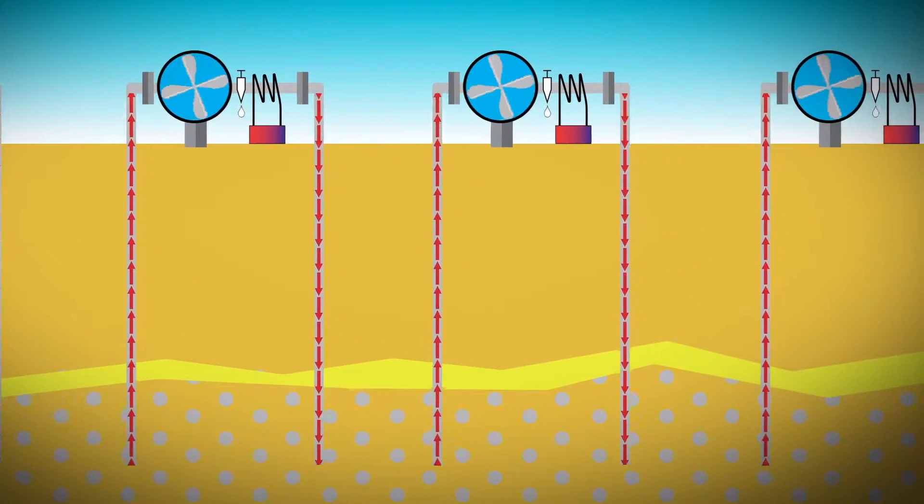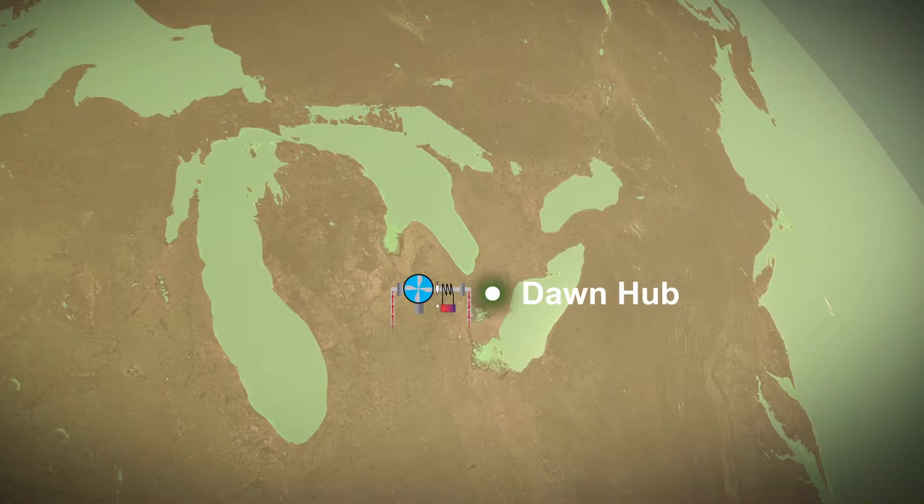Compressors are used for all sorts of processes in industry. One example is the compression of natural gas that is piped to our homes, like the Jite Engine Compressors at Dawn in Southwest Ontario.